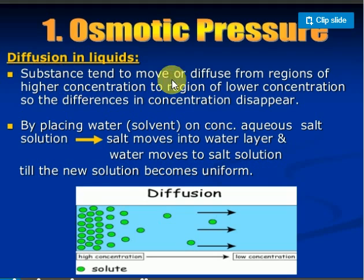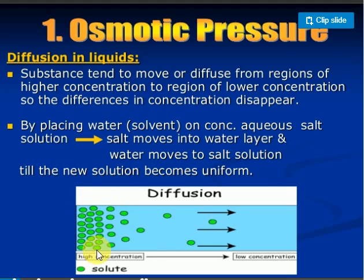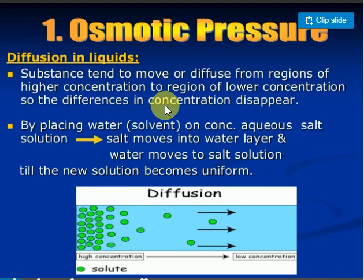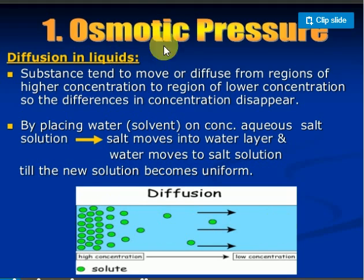To understand osmotic pressure, first understand diffusion. In diffusion, gas molecules or substance molecules move from high concentration to low concentration. For example, when you spray a perfume bottle, gas molecules move from high pressure to low pressure — that is diffusion. Osmosis is the reverse of diffusion. In diffusion, molecules move from high concentration to low concentration; in osmosis, water molecules move from low concentration to high concentration.